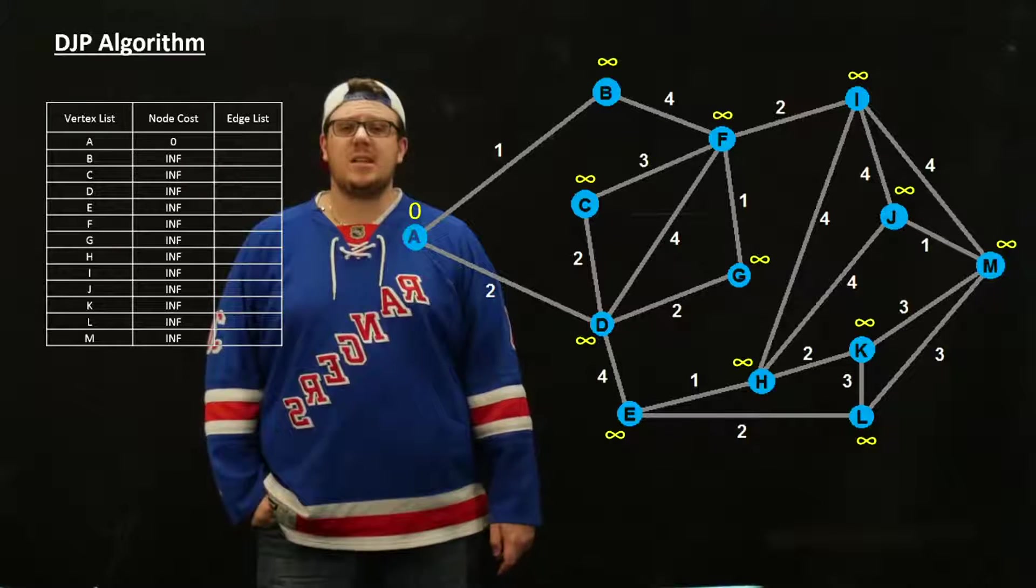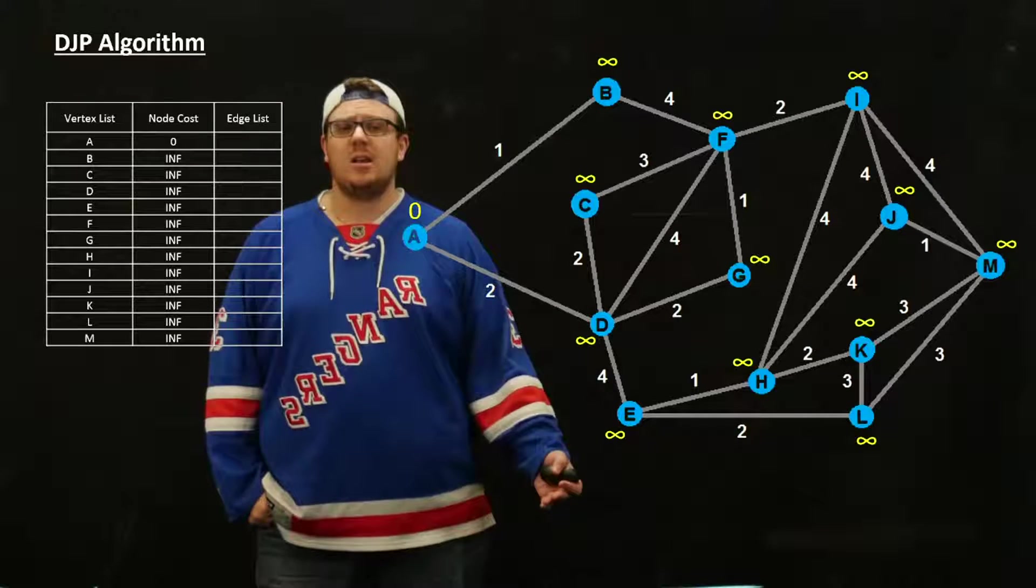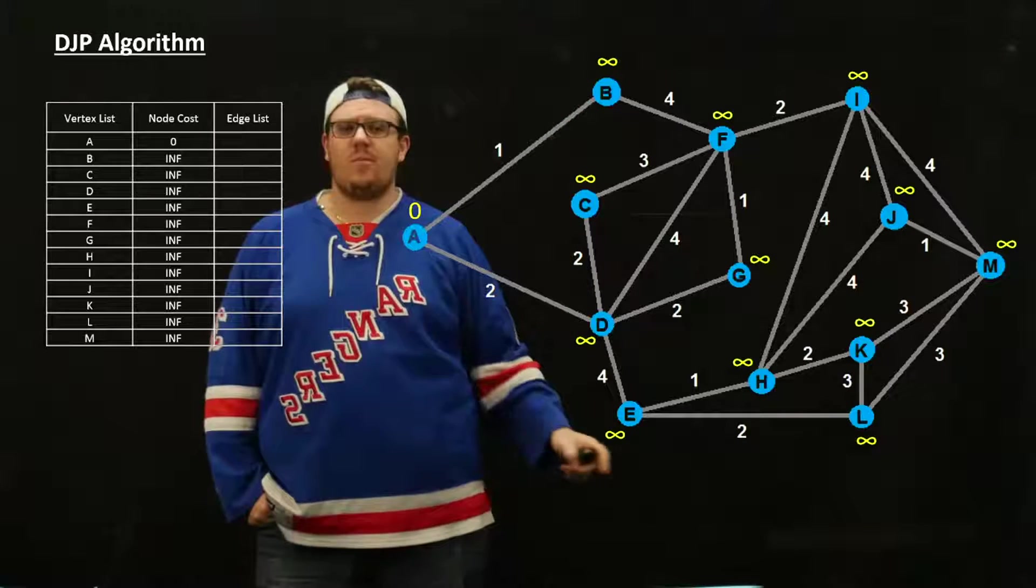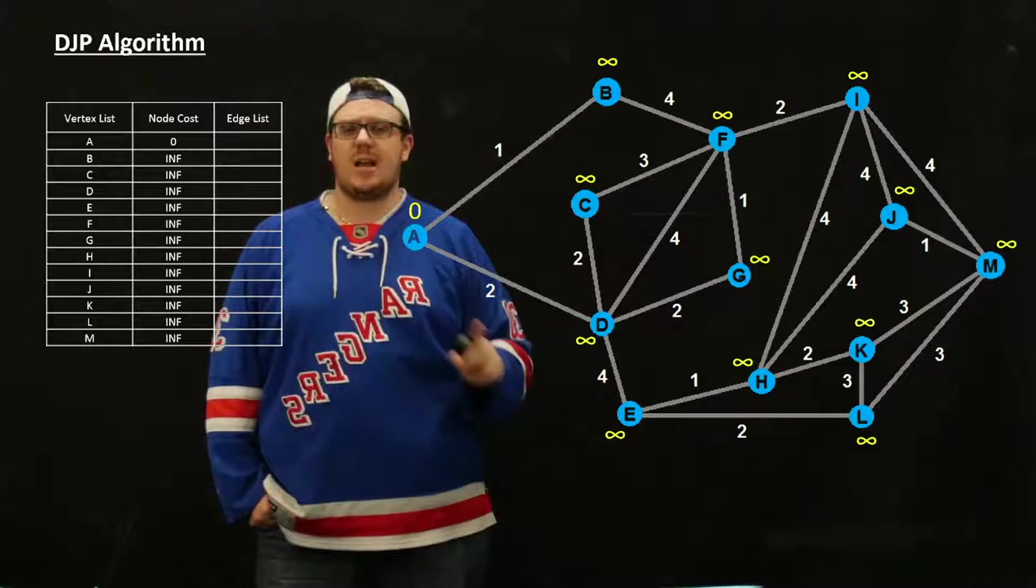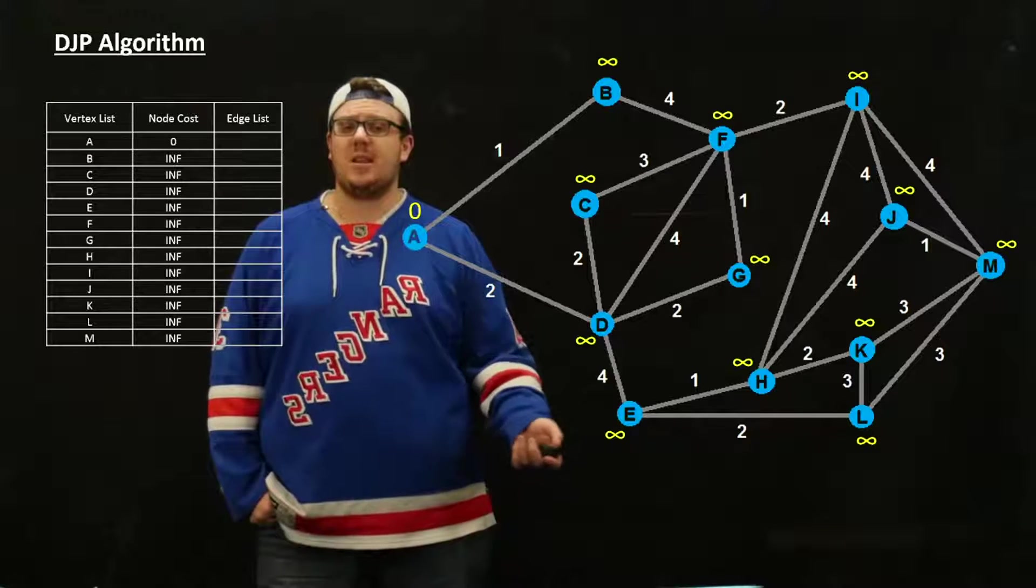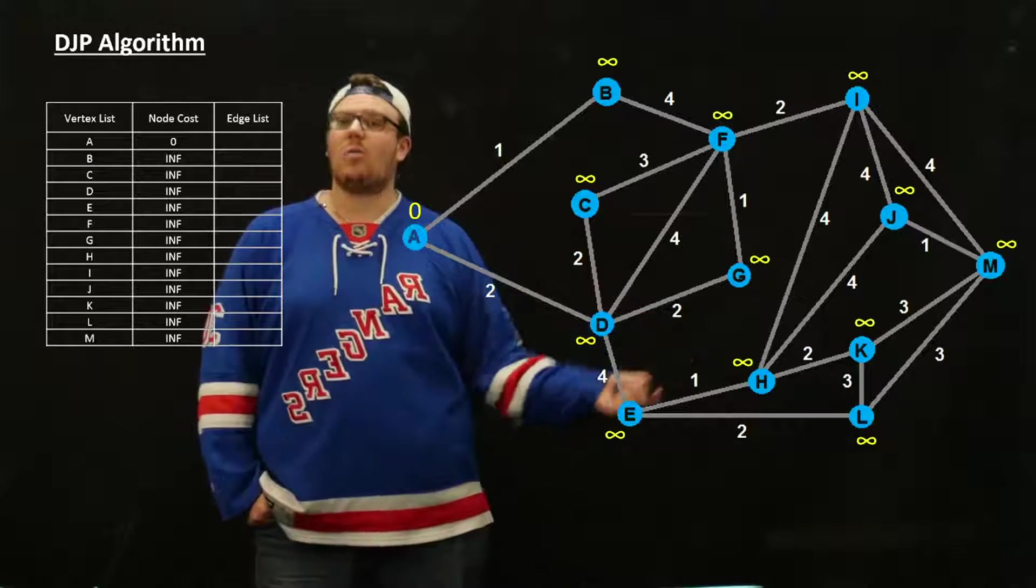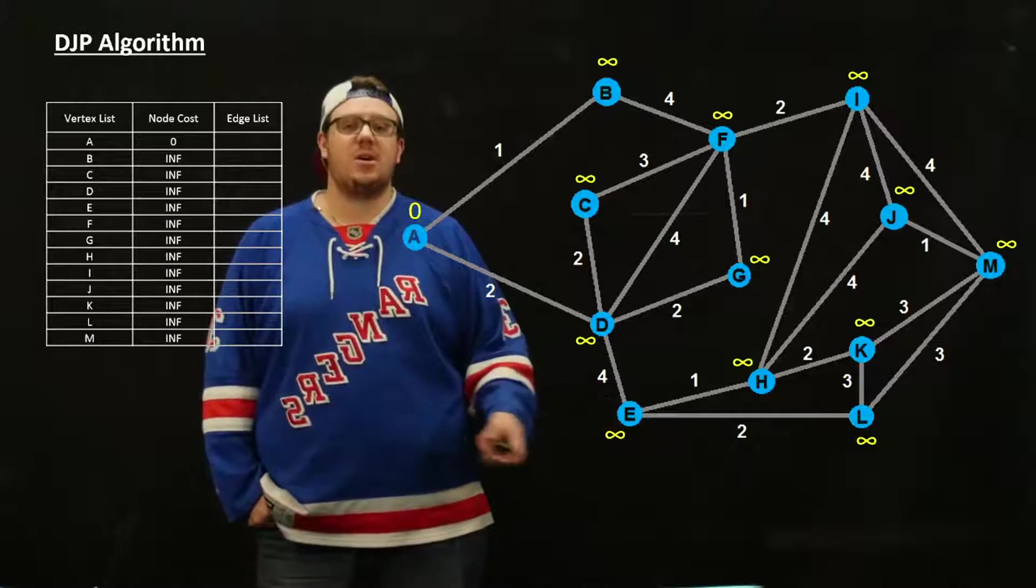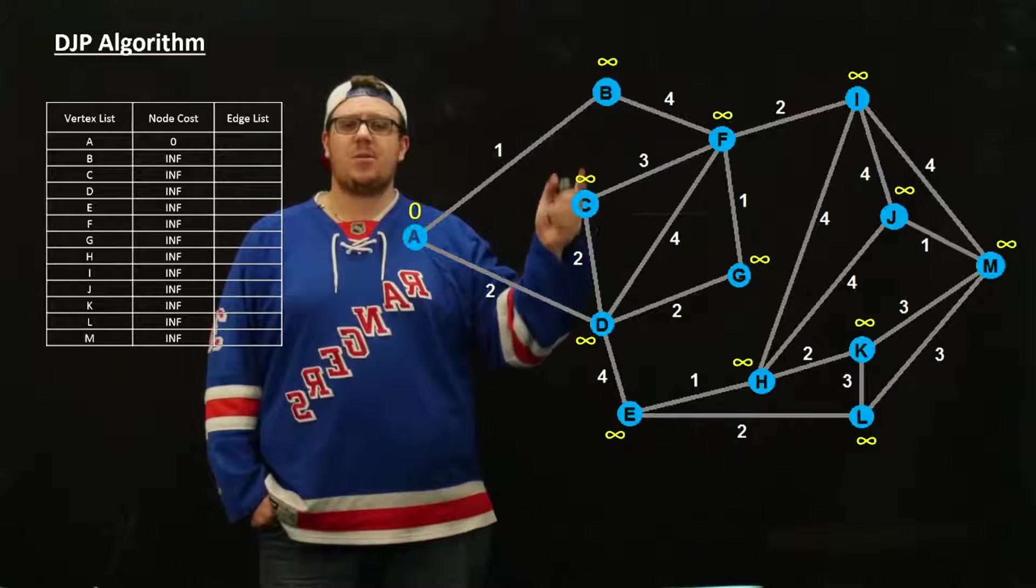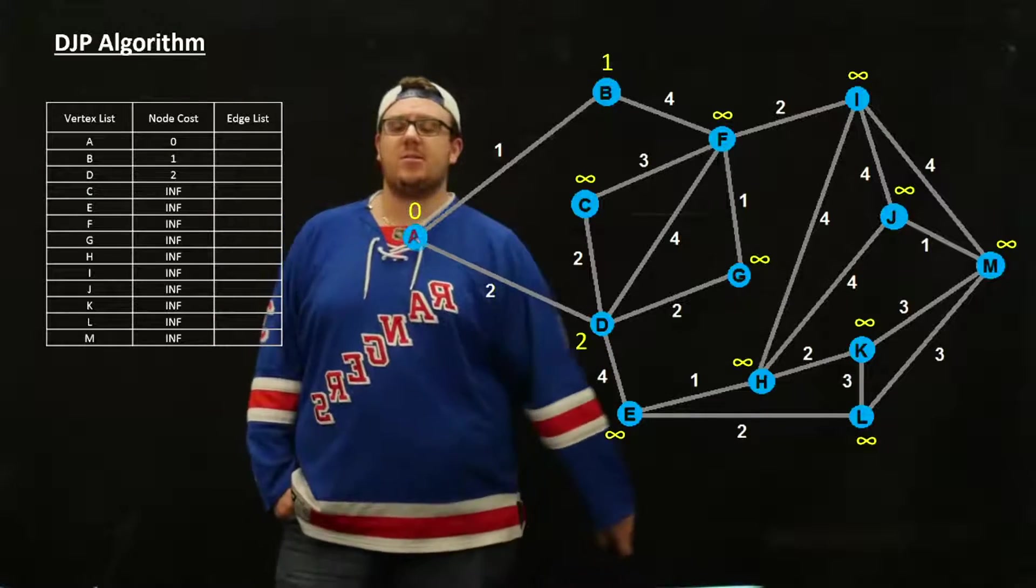The next thing you do is all nodes that are attached to A in some way. In this case, we have B, which is attached along this edge, and we have D, which is attached along this edge. So you update those with a cost that is the distance away from something that's already in your minimum spanning tree. We initialize the spanning tree with A, and the distance that B is away is 1. The distance that D is away is 2. So we update those node costs.